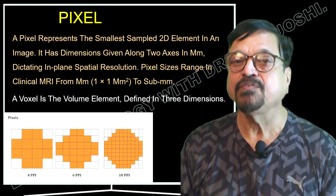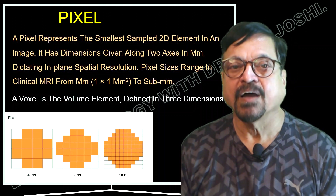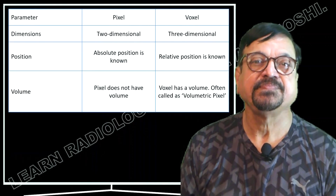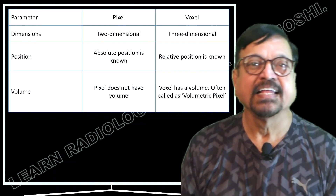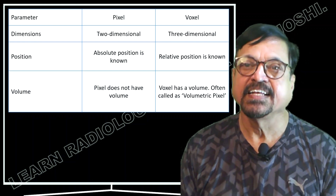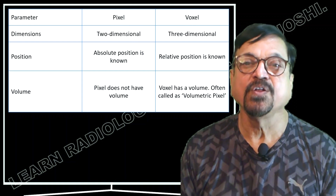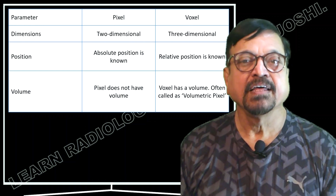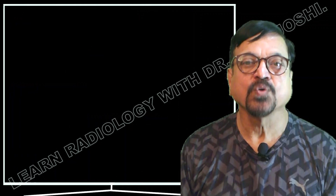Here we are seeing three images — of 4, 6, and 12 — for comparison. A voxel is a volume element defined in three dimensions. Here again we see the difference between a pixel and a voxel: pixel is two-dimensional while voxel is three-dimensional in position. A pixel's absolute position is known, whereas a voxel's relative position is known. Regarding volume: a pixel does not have volume, whereas a voxel, being three-dimensional, has volume.